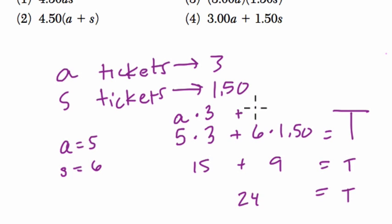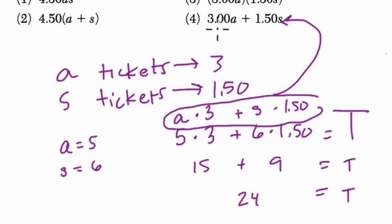And then over here, we have the number of students, S, times the cost for each student. And these two added together give us the total amount of tickets. And if you look at all of my choices, the closest is here, choice 4.